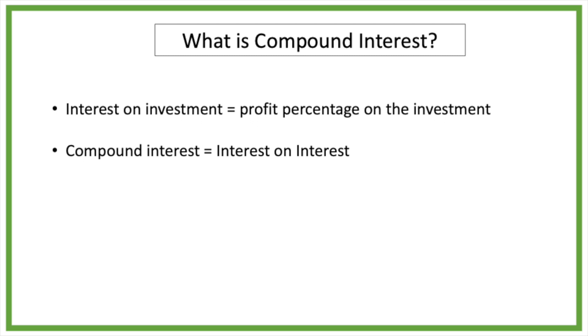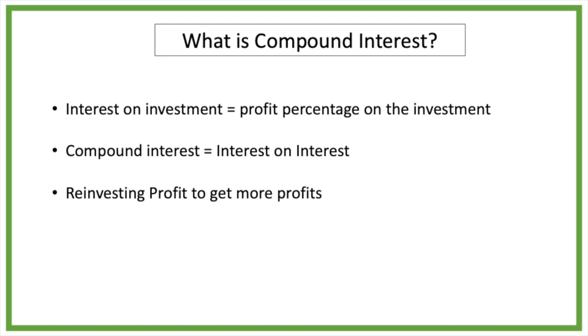That means that after one year you will have 5 dollar profit or 5 percent of 100 dollar. Compound interest is when you get paid interest on your interest, or when we reinvest our profits we will also get paid interest on these profits, which is called compound interest. This will become more clear with some examples.